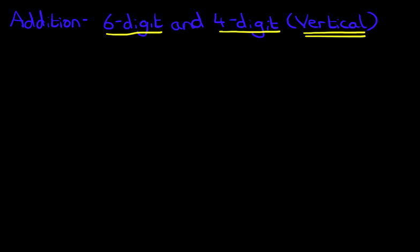So let's have a look at the question we're going to be working through. We're going to write this in the vertical format: 487,359 plus 6,473.